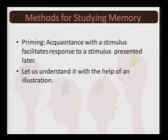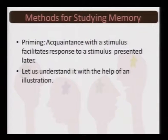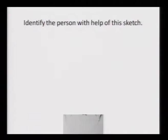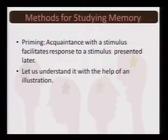The third method of studying memory is called priming. Priming is an interesting technique which basically requires acquaintance with a stimulus that facilitates response to a stimulus presented later on. To illustrate: if you are shown a very small part of a face and asked to identify the person, you would initially be unable to do so — unless you are already acquainted with the stimulus.